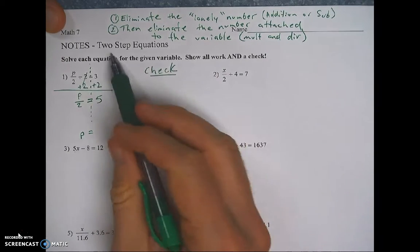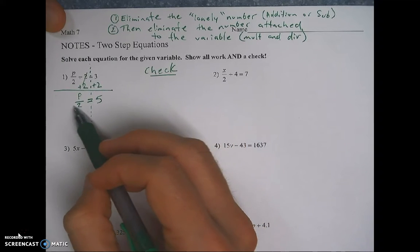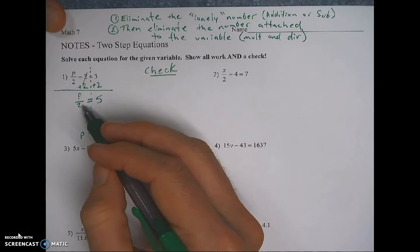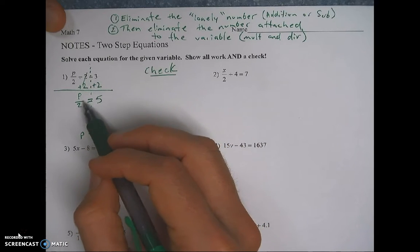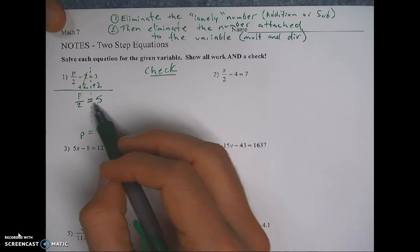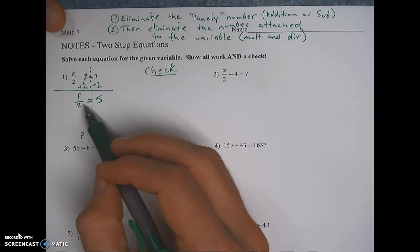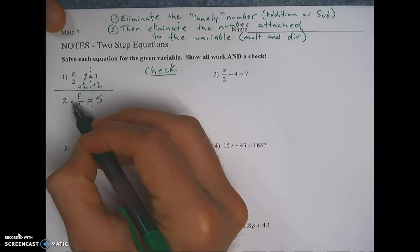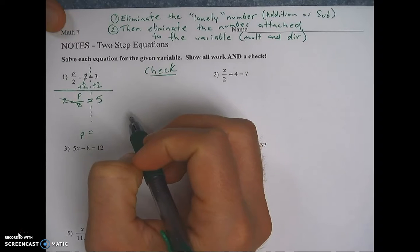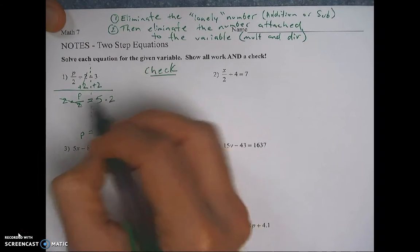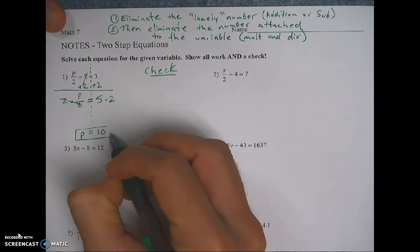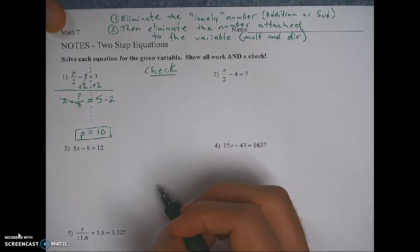And now I still have p over 2. So I'm not done. That's why these are two-step equations. I've got one more step to go. I need to now eliminate this 2 that's attached to the p. So step 2. Eliminate the number that's attached to the variable. So p is being divided by 2. Something divided by 2 equals 5. So the number's 10. Something divided by 2 is 5. 10 divided by 2 is 5. So how do we undo division? We multiply. So dividing by 2 and multiplying by 2 cancel each other out. We've got to multiply by 2 on the other side to keep this balanced. So both sides are equal. And then that gives me the 10 that I knew was the answer. So p equals 10. At least that's what I think. I need to check it.